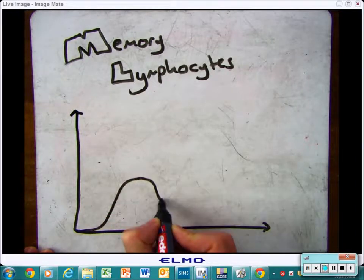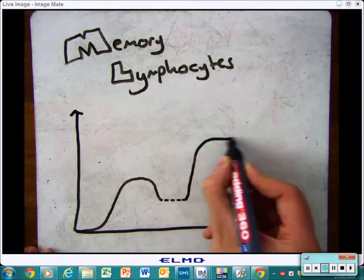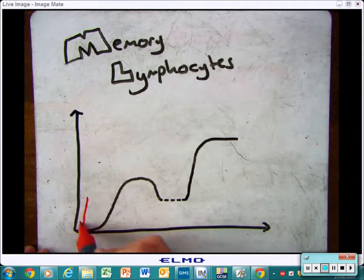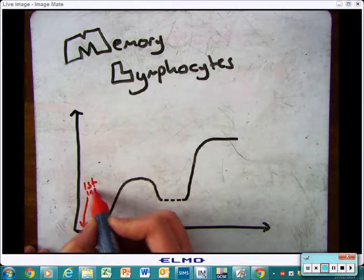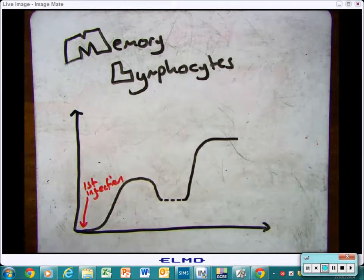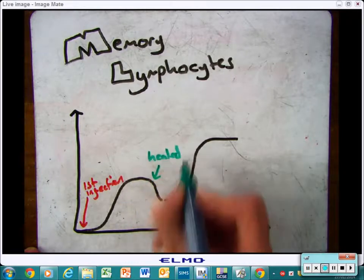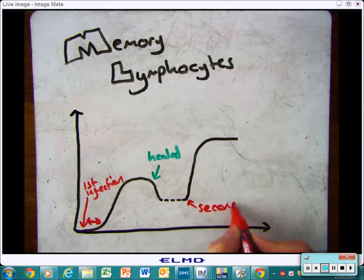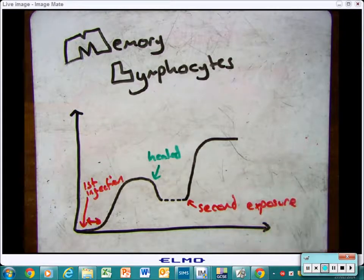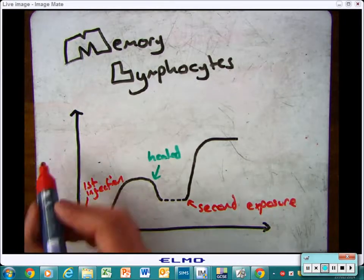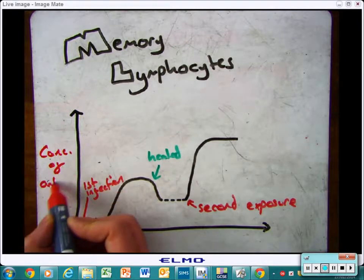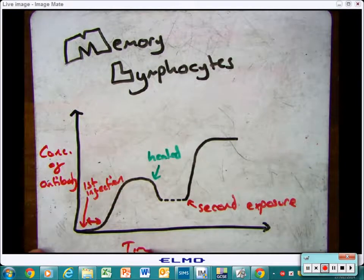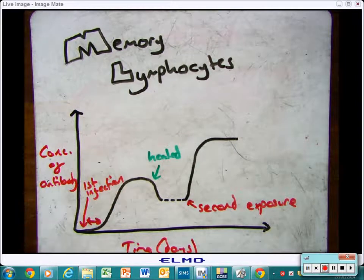This graph shows you that as you start to become infected, it takes a bit of time for the antibodies to start to produce. The y-axis going up shows you the number of antibodies in the body. As you get healed, the number of antibodies stay there. Then you get exposed again, the antibodies produce straight away and in more numbers, which means that it becomes a lot quicker and a lot easier for you to be healed.